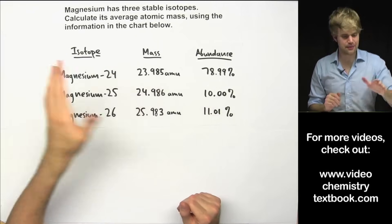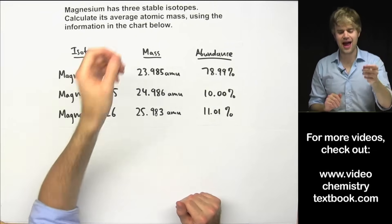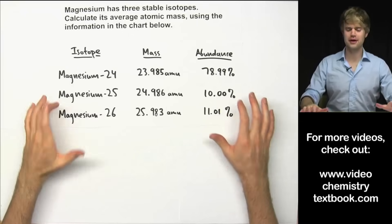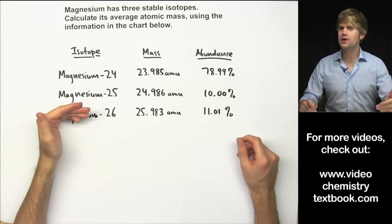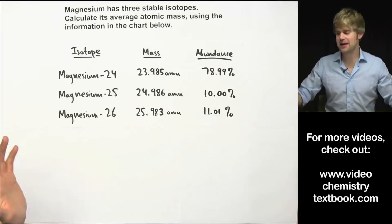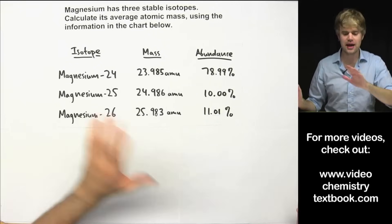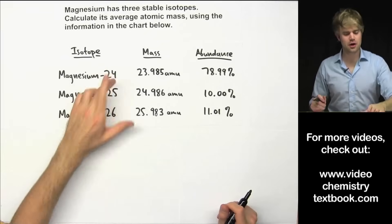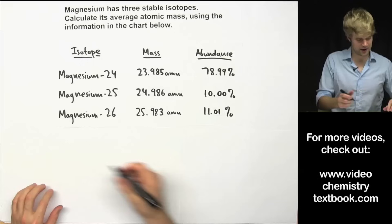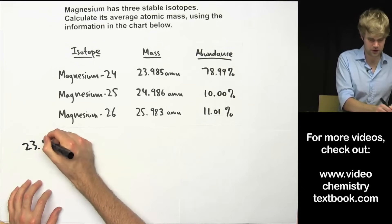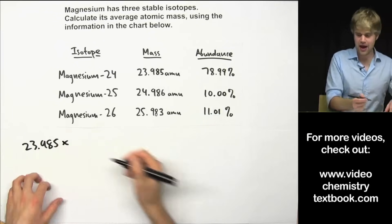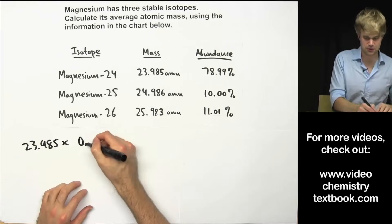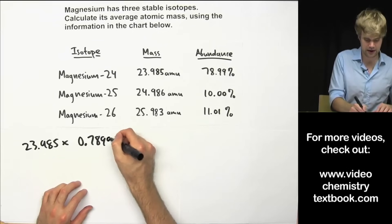Magnesium has three stable isotopes. Calculate its average atomic mass using the information in the chart below. We've already done this with two isotopes but you can do it with as many isotopes as you need. It's the same process throughout. So let's start with magnesium-24. We're going to want to take its mass which is 23.985 and multiply it by its abundance expressed as a decimal, 0.7899.